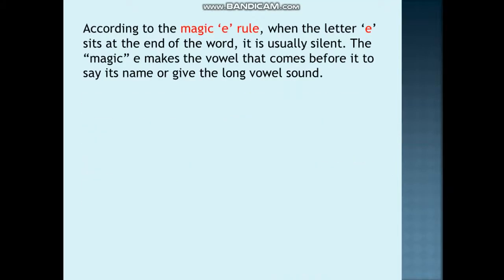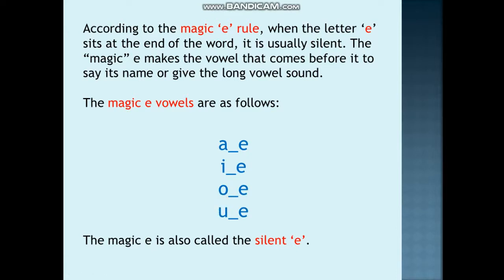So, according to the magic E rule, when the letter E sits at the end of the word, it is usually silent. The magic E makes the vowel that comes before it to say its name and give the long vowel sound. So, the magic E vowels are as follows: A becomes 'ay', I becomes 'eye', O becomes 'oh', and U becomes 'you'. The magic E is therefore also called the silent E.